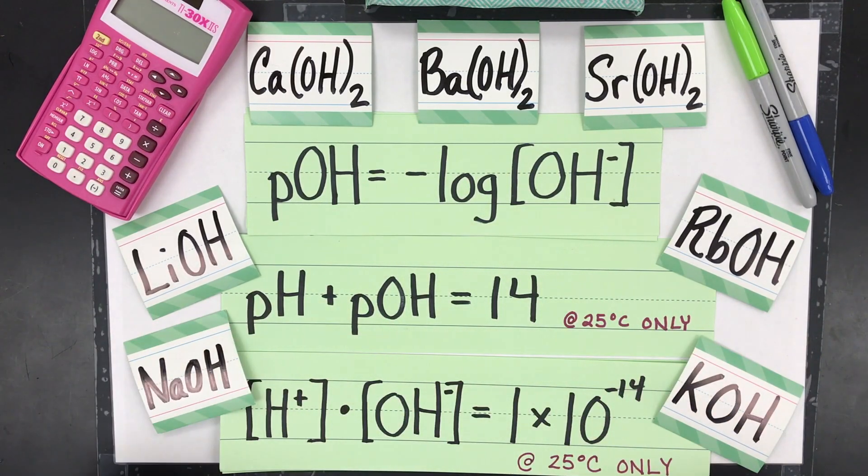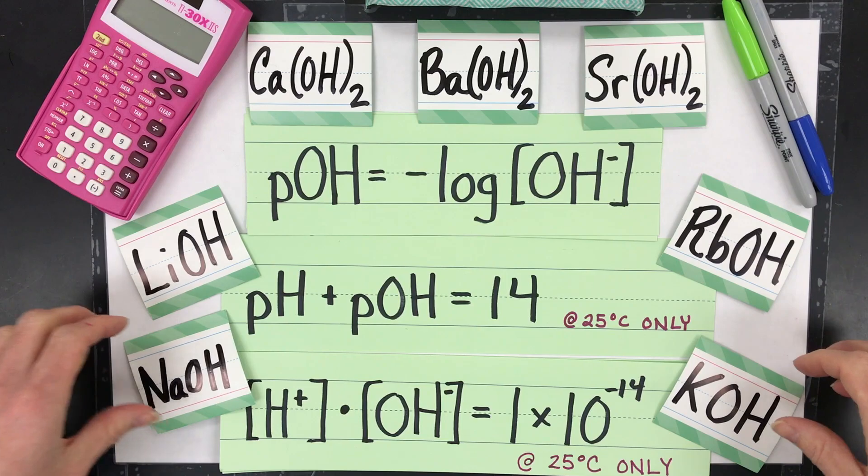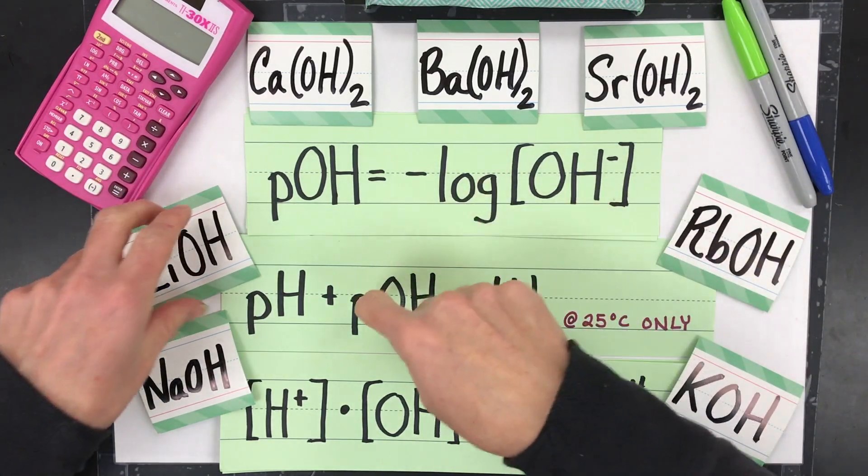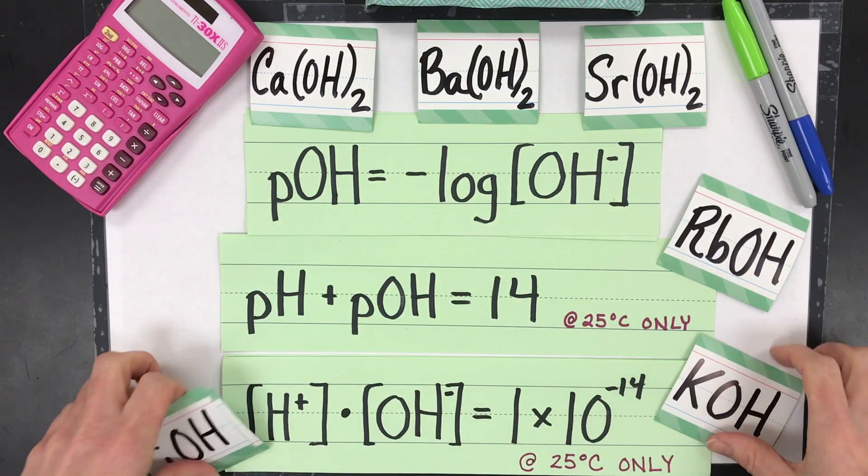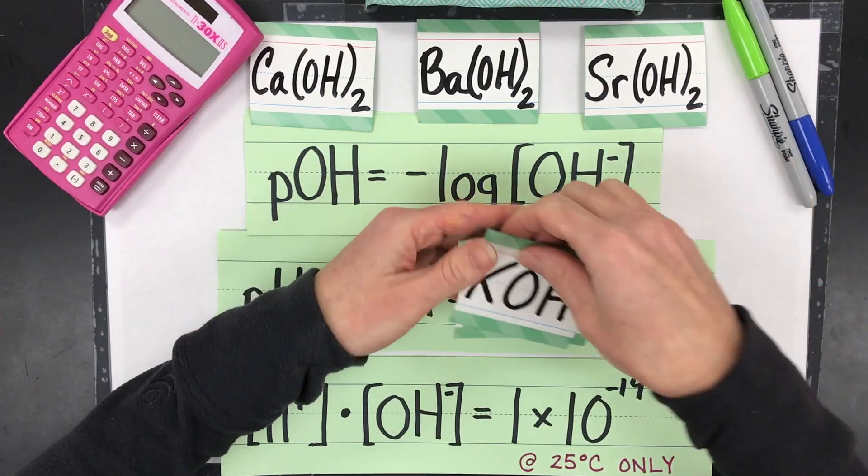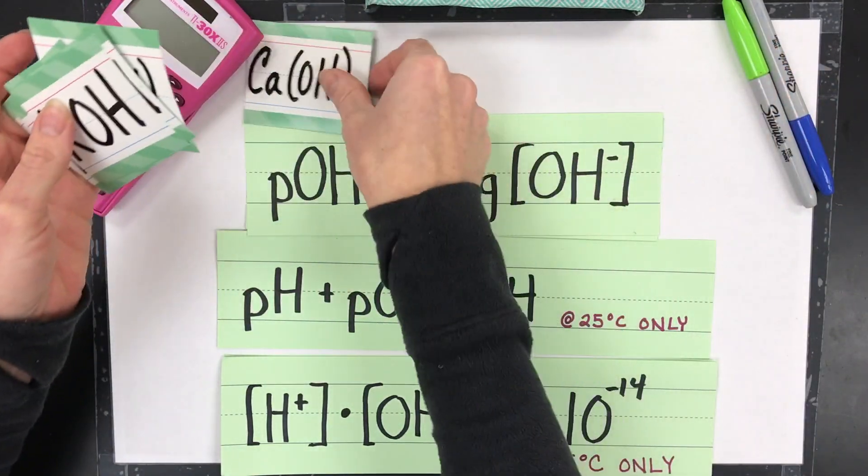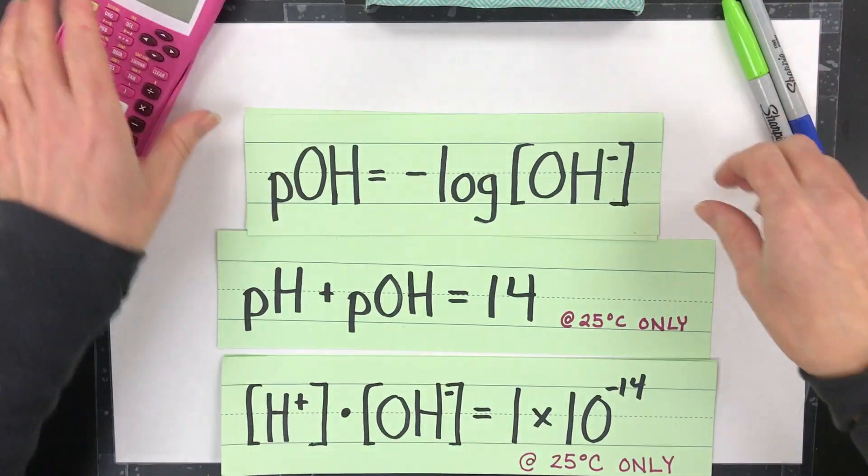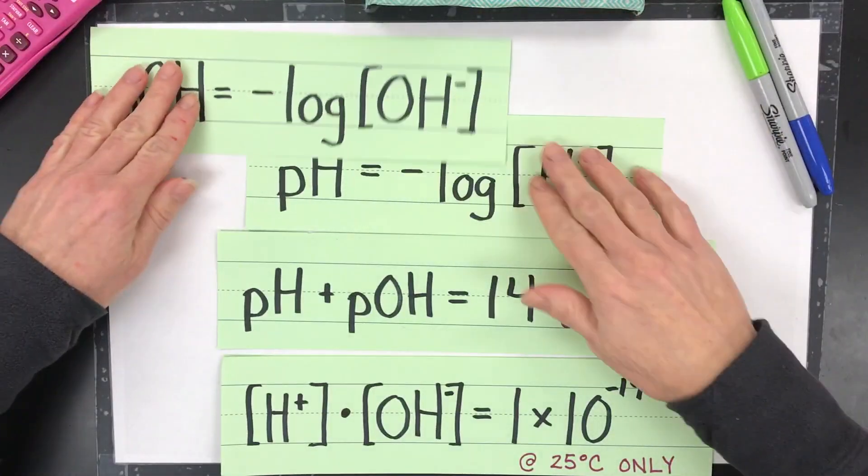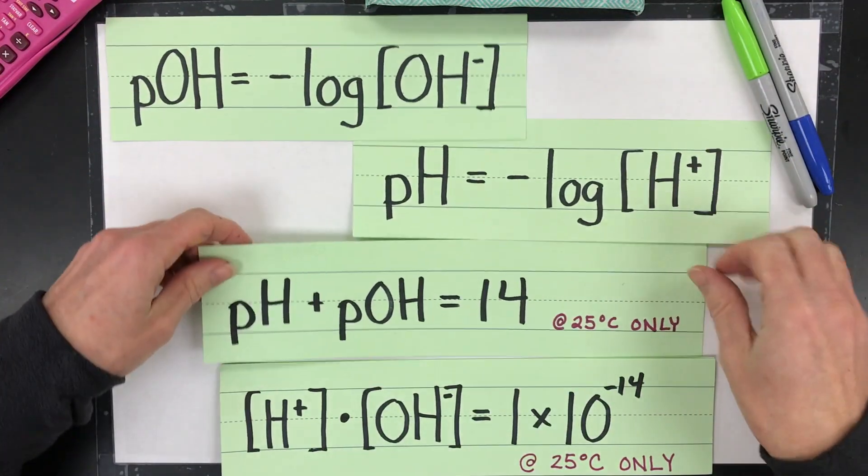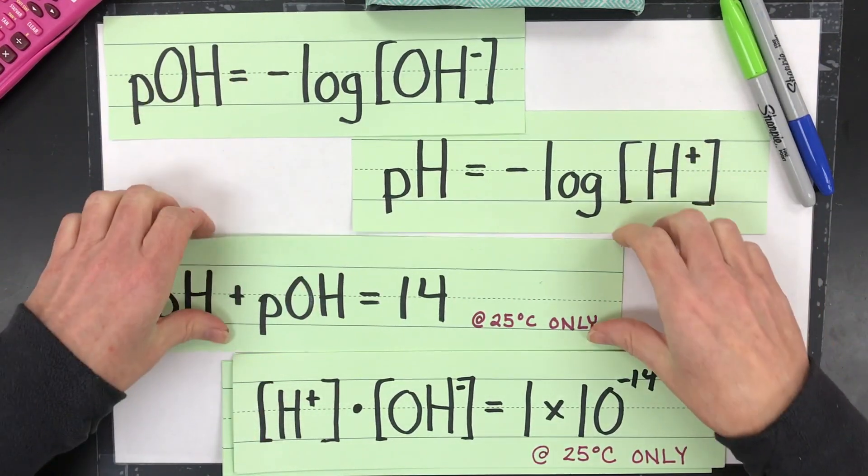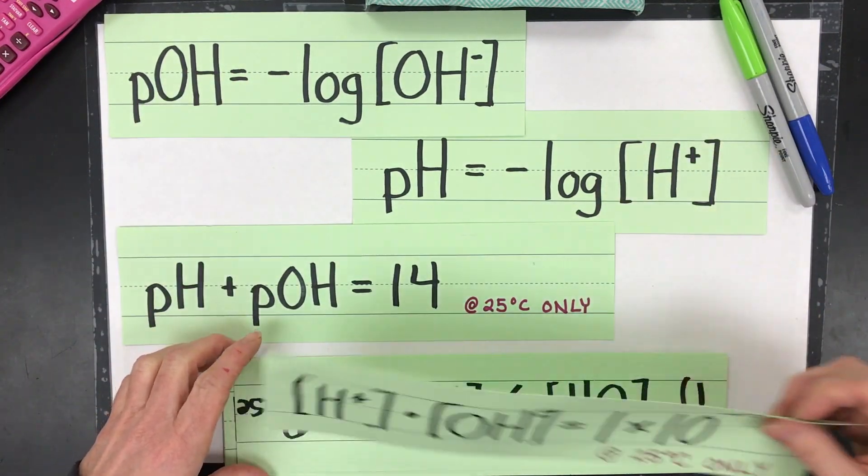First thing you want to do is write down all the formulas that we're going to use to calculate these values, so pH, pOH, and the hydrogen and hydroxide concentration. I'd memorize these strong bases as I remove them. So get a piece of paper so you can write these down. These are your calculations that you're going to need. These four are the major ones.